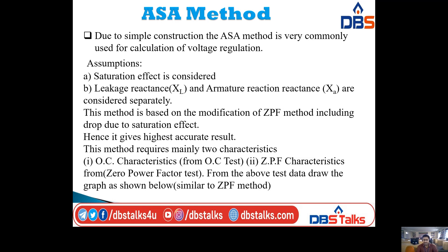The ASA method (American Standard Association method) is very commonly used for calculation of voltage regulation due to its simple construction. It assumes two conditions: first, the saturation effect is considered; second, leakage reactance XL and armature reaction reactance XA are considered separately. This method is based on a modification of the ZPF method, also called the Poitier triangle method.